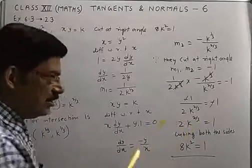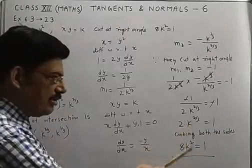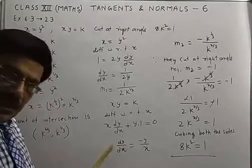Because 1/3 power is there, you have to cube. So cubing both the sides we get 8k² = 1. Thank you.